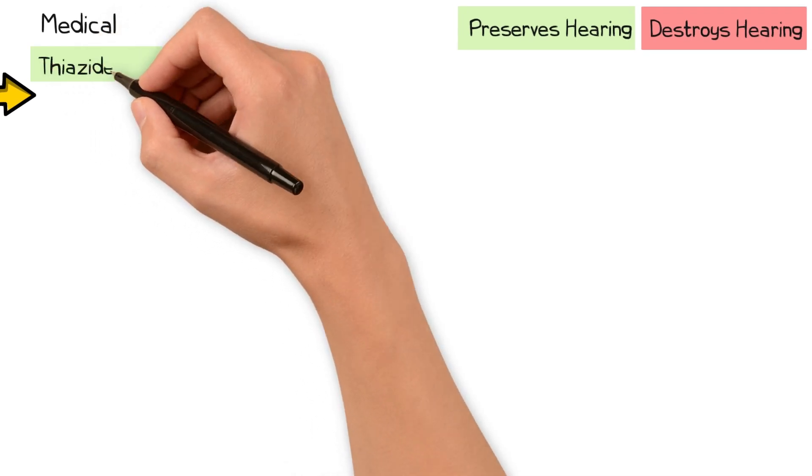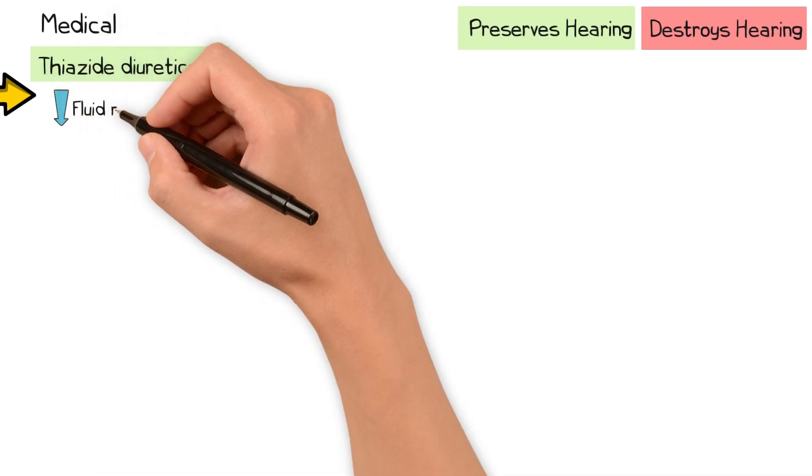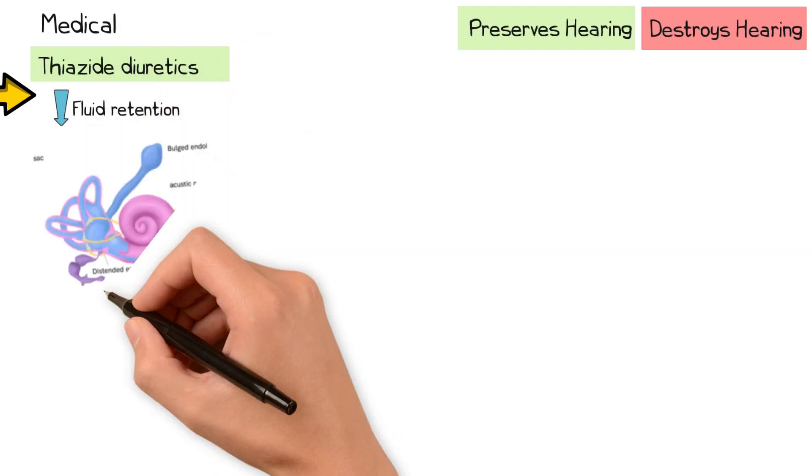Thiazide diuretics can be helpful and work by reducing fluid retention, which may in turn reduce the degree of hydrops.